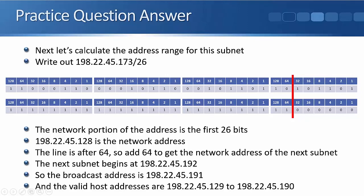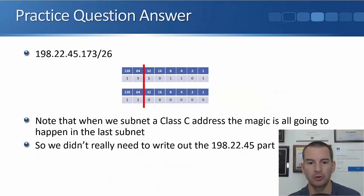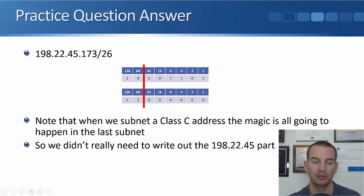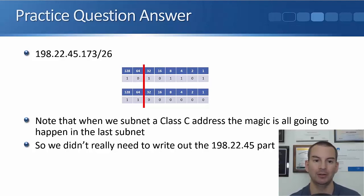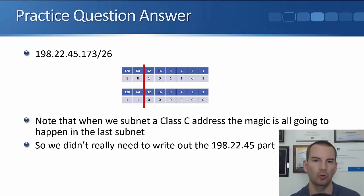So I know this is in network 198.22.45.128. I add on 64 because that's where the line is, giving the next network address as .192. Since the next network address is .192, the broadcast address for this subnet is one less — it's .191. Available hosts are everything in between: 198.22.45.129 to 198.22.45.190. An important point: since subnetting is happening in the last octet, the first three octets (198.22.45) are always unchanged, so you can save time by only writing out the relevant octet.